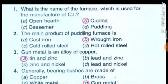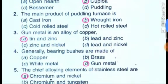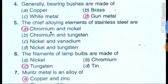The main product of the puddling furnace is wrought iron. Gun metal is an alloy of copper, tin, and zinc. Generally, bearing bushes are made up of gun metal.